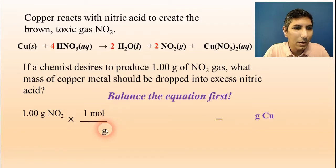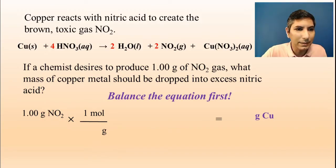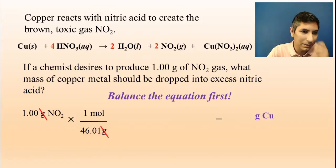How many grams are in one mole of nitrogen dioxide? Use the periodic table. Add up those individual atomic masses. Nitrogen is about 14 and each oxygen is about 16, so that adds up to about 46.01 grams in a mole of that compound. We can cancel grams, top and bottom.